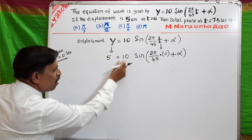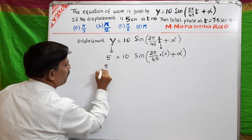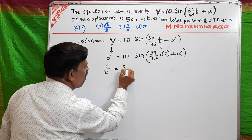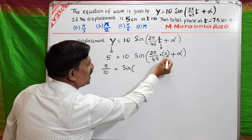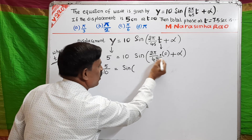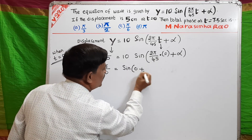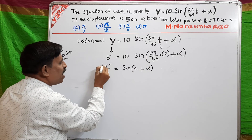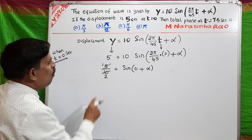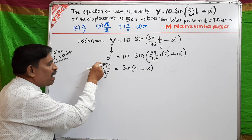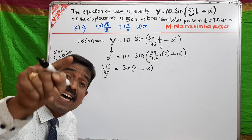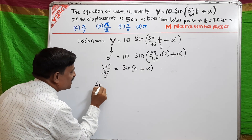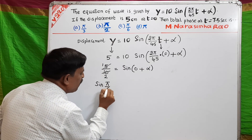10 comes to the denominator: 5/10 = sin(0 · anything + α). Zero into anything is 0, so we get 1/2 = sin(α). Now 1/2 means sine 30 degrees, that is sine of π/6.